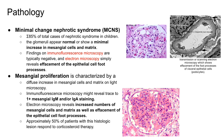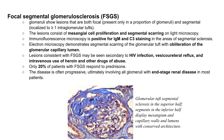Mesangial proliferative nephrotic syndrome is characterized by a diffuse increase in mesangial cells and matrix on light microscopy. Immunofluorescence may reveal trace to 1+ mesangial IgM or IgA staining. Electron microscopy reveals increased mesangial cells and matrix as well as effacement of epithelial cell foot processes. Approximately 50% of patients with this histological lesion respond to corticosteroid therapy. In focal segmental glomerulosclerosis, glomeruli show lesions that are both focal and segmental, consisting of mesangial cell proliferation and segmental scarring on light microscopy. Immunofluorescence is positive for IgM and C3 in the areas of segmental sclerosis.